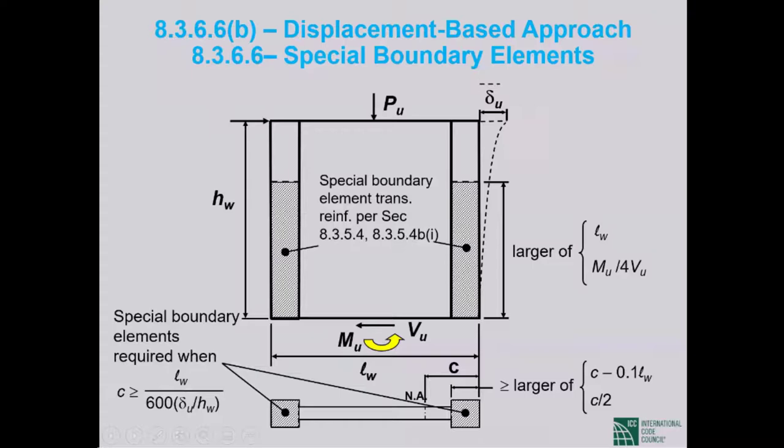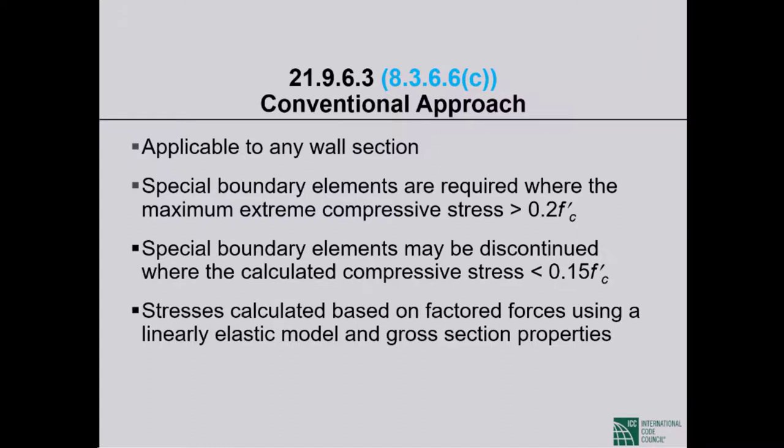The other approach — the conventional approach, applicable when the displacement-based approach does not apply or is not being used — applies to any wall section. Special boundary elements are required where the maximum extreme compression fiber stress exceeds 0.2 F sub C prime. We calculate P sub U divided by A sub G plus M sub U divided by I sub G multiplied by half L sub W. If that sum exceeds 20% of F sub C prime, special confinement is triggered. The specially confined boundary zone may be discontinued where the calculated stress drops below 15% of F sub C prime.